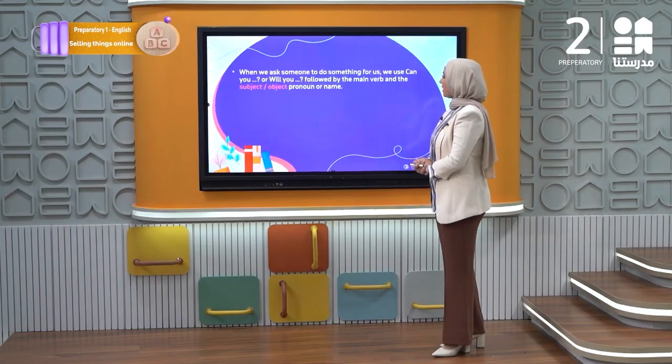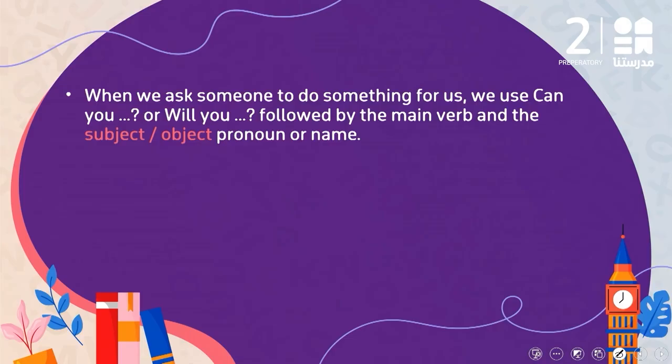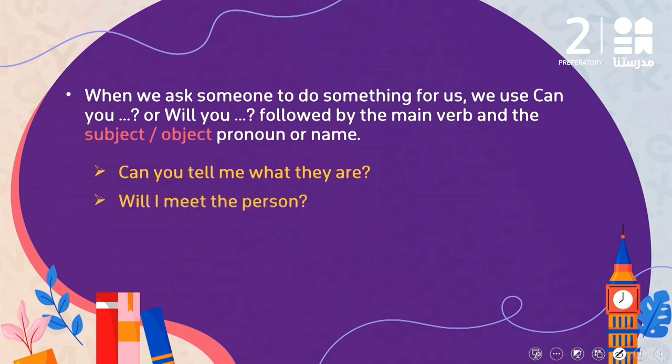Now, let's check what we have right here. When we ask someone to do something for us, we use 'can you' or 'will you' followed by the main verb and the subject, object pronoun, or name. For example, 'Can you tell me what they are?' or 'Will I meet that person?'